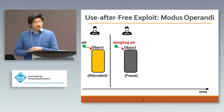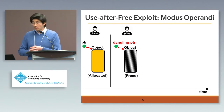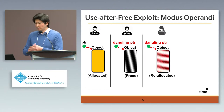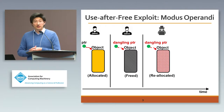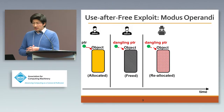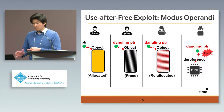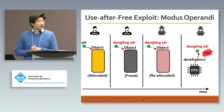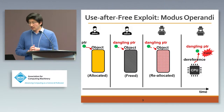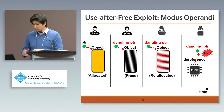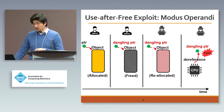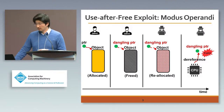In the second stage, this pointer is freed, and the variable PTR becomes a dangling pointer. Things get weird in the third stage, where this chunk of memory has been reallocated by some other objects controlled by attackers. Now this dangling pointer is pointing to something that can be malicious. In the final stage, things get really bad because the dangling pointer is dereferenced, which may cause control flow hijacking, memory corruptions, critical information leakage, and even more serious issues.